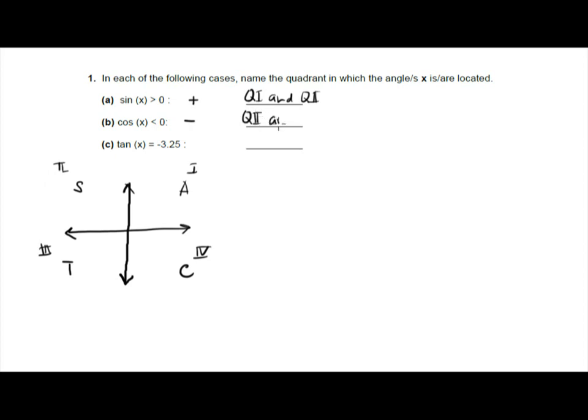And then tangent x is equal to a negative number, so tangent is negative in the second and in the fourth. Because as you can see, this A means all, so tangent is part of that. T tangent is positive in the third, so the answer should be quadrant two and quadrant four.